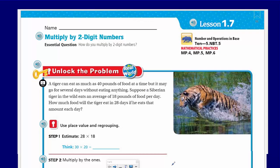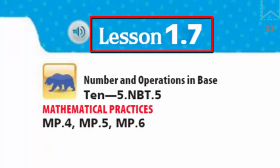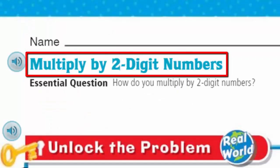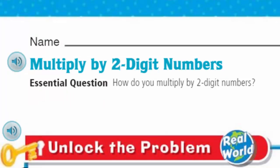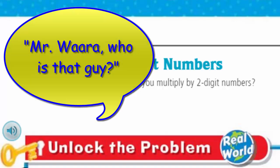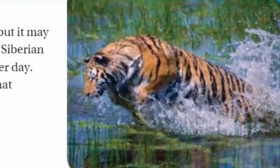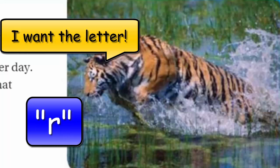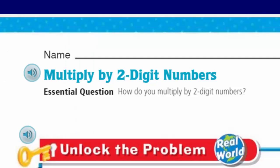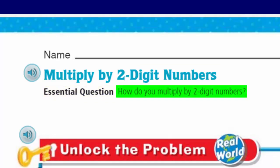What are we doing today, Mr. Wara? Great question. We're looking at lesson 1.7. Yes, and what's our topic? Well, it looks like we're gonna multiply by two-digit numbers now. Didn't we just do one-digit numbers the other day? We're just moving on to two-digit numbers? That was fast. Now, our essential question — this is our purpose, our learning target, what's guiding us and what our outcome should be — what we should learn today is: how do you multiply by two-digit numbers?